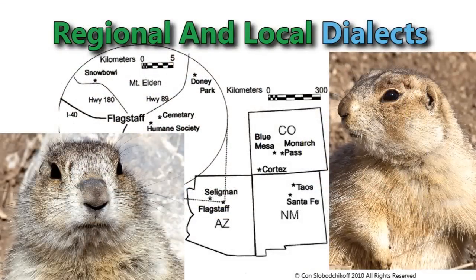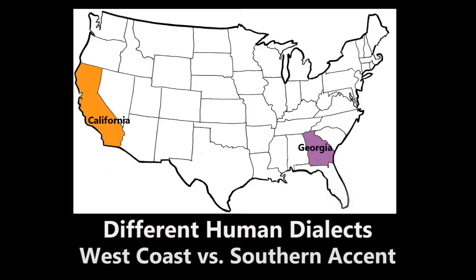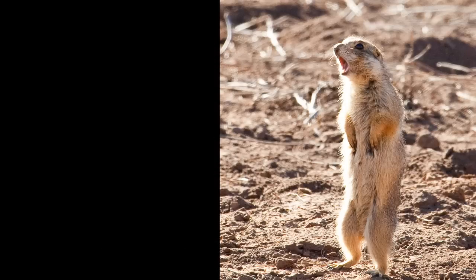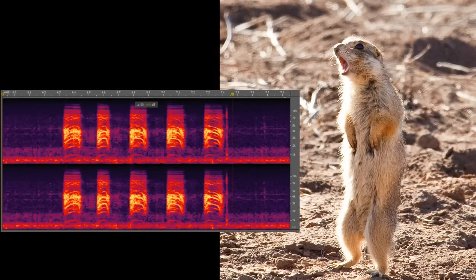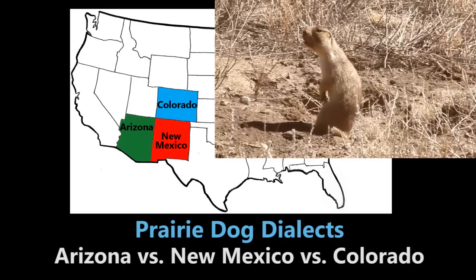We have also found that prairie dog alarm calls have dialects, much like human dialects. Just like a person from California might say the word "dog" somewhat differently from a person saying "dog" in Georgia, prairie dogs also have slight differences in the way that they pronounce an alarm call for, say, human in Arizona versus in New Mexico versus in Colorado.